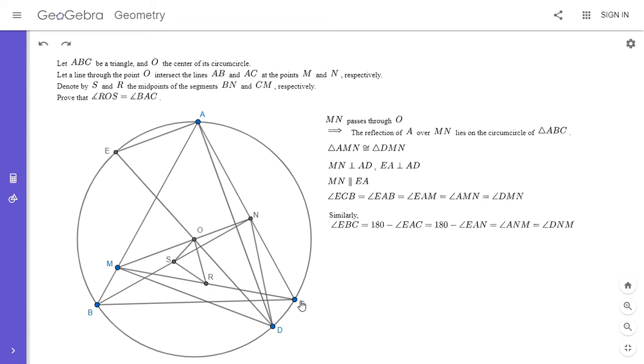And angle EAC is 180 minus angle EAN, which is the same as angle ANM, since MN is parallel to EA. So those two angles have to add up to 180. So 180 minus angle EAM is angle ANM, which is angle DNM.